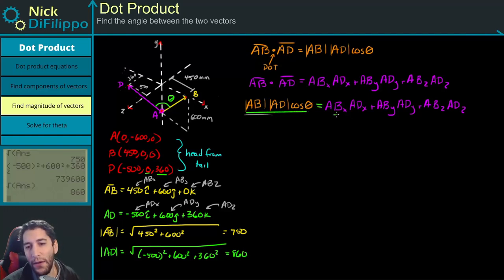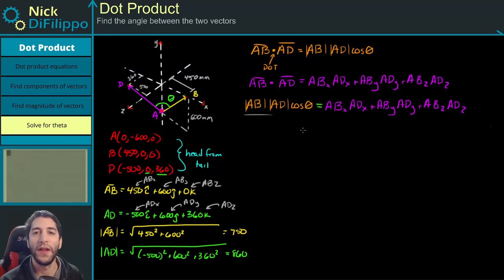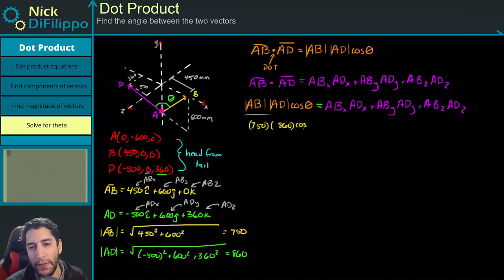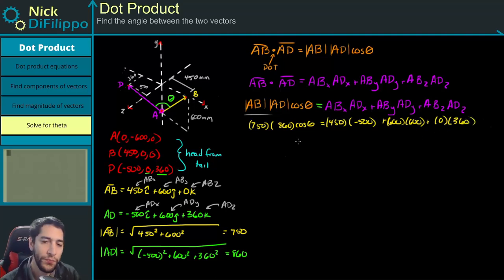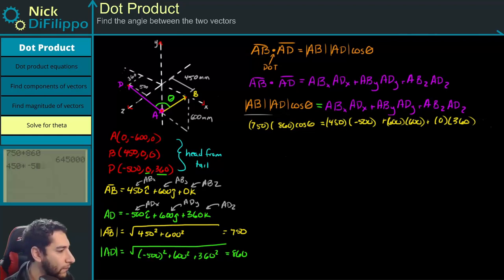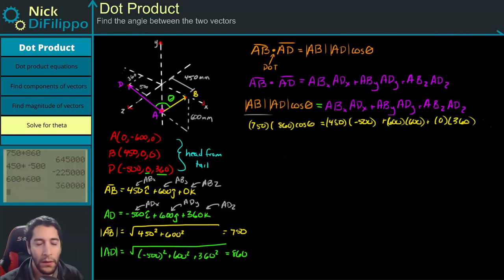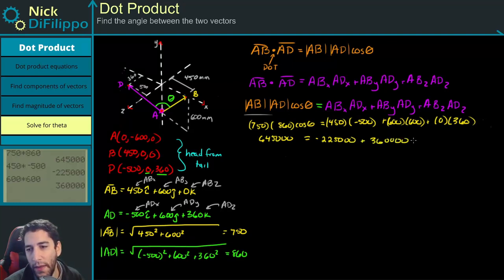So now, I know everything on this side, and I know everything, except for what I'm solving for, and I know everything on this side. So now, let's put this all together and solve for theta. I'll have 750 times 860 times the cosine of theta, which is equal to 450 times minus 500 plus 600 times 600 plus 0 times 360. So I'll have 645,000 is equal to minus 225,000 plus 360,000 plus 0.